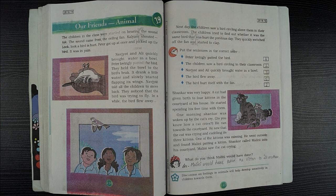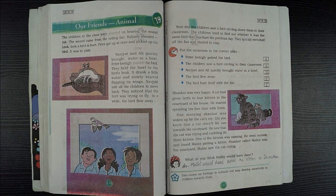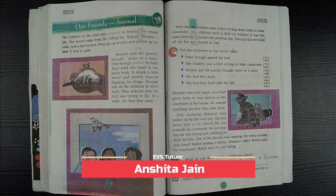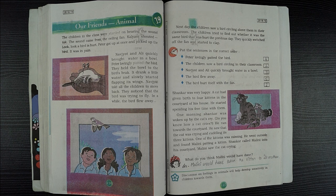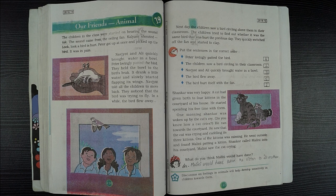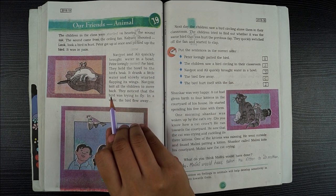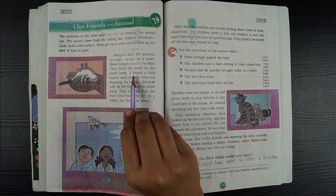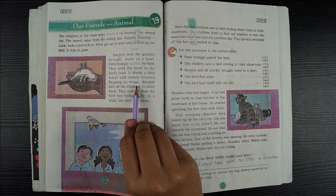Peter got up at once and picked up the bird. It was in pain, the bird was hurt. He patted the bird and held the bowl to the bird's beak. It drank a little water and slowly started flapping its wings.